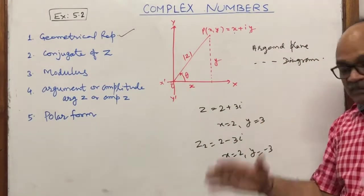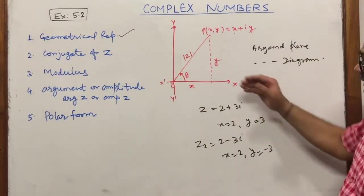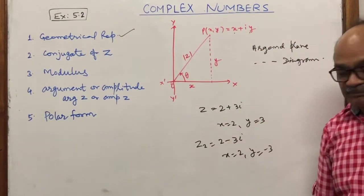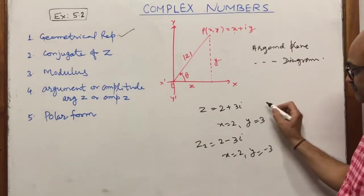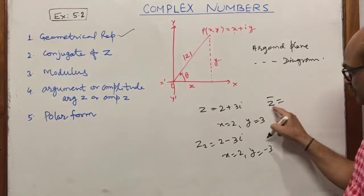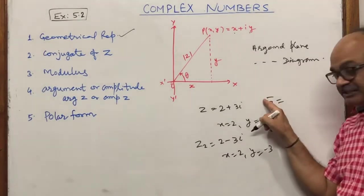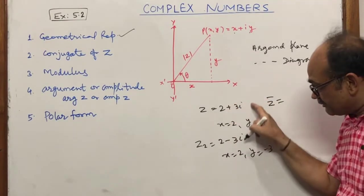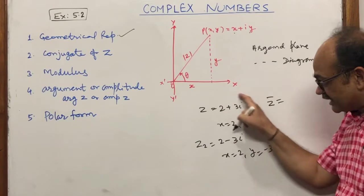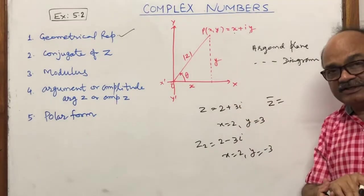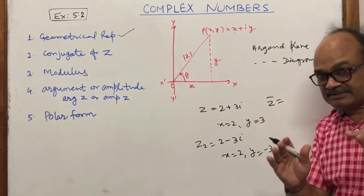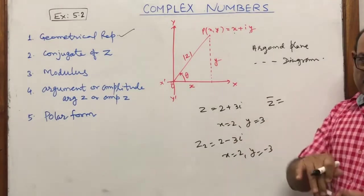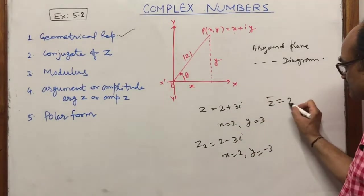Now, what is the conjugate of z? The conjugate of z is represented as z-bar. To find the conjugate, the sign of the imaginary part is reversed — if it is plus, make it minus; if it is minus, make it plus.